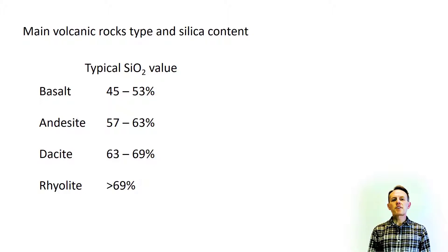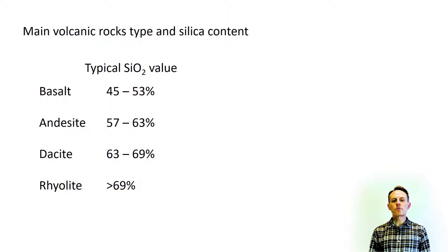The tectonic setting has a major influence on the magma generation process. At mid-oceanic ridges and hot spots, such as under Iceland or Hawaii, the partial melting of mantle rocks produces basalts. In Iceland, for example, about 90% of the volcanic rocks are basalts.